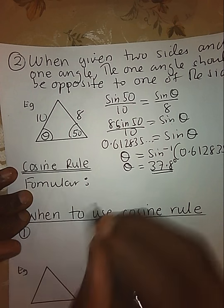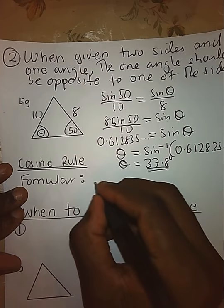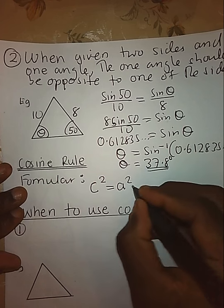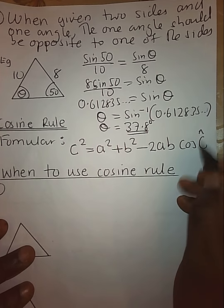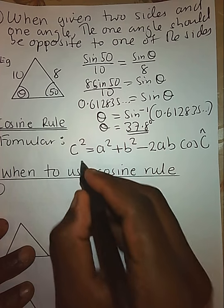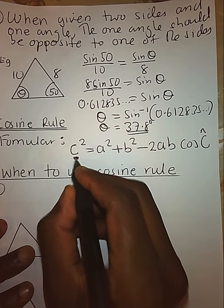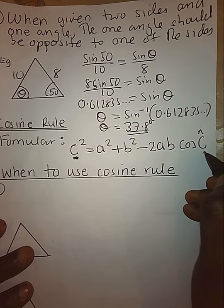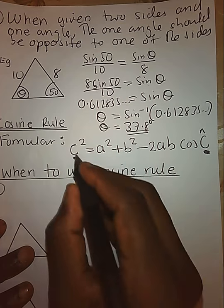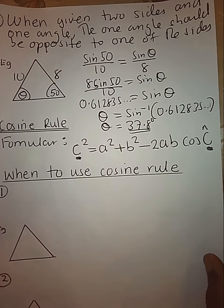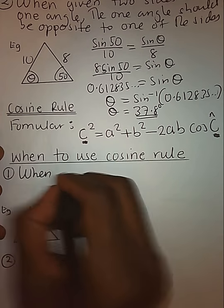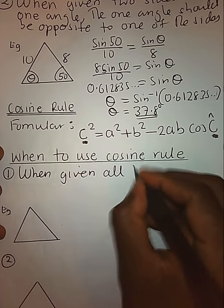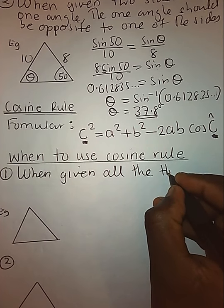Those are the two ways we can use the sine rule. Now let's look at the cosine rule. The cosine rule is given by: C squared equals A squared plus B squared minus 2AB cosine of angle C. We note that C is both the angle and the side, where the side C is opposite to angle C, and A and B are the other two sides.